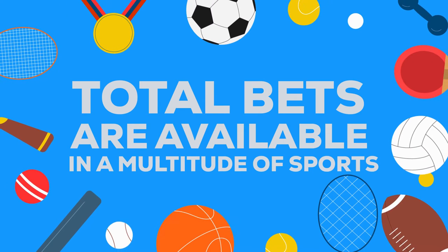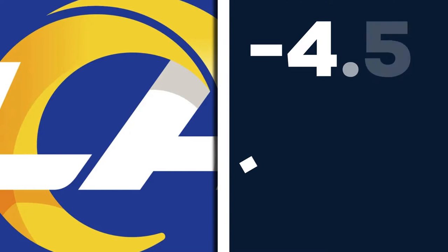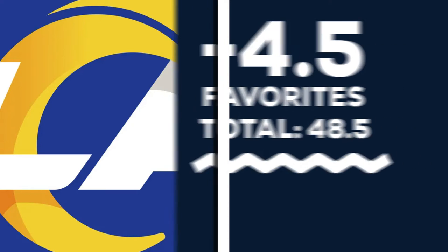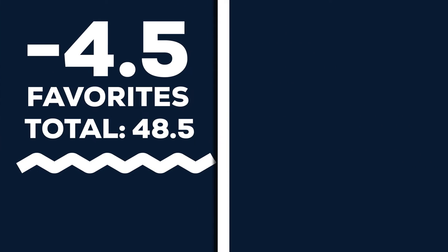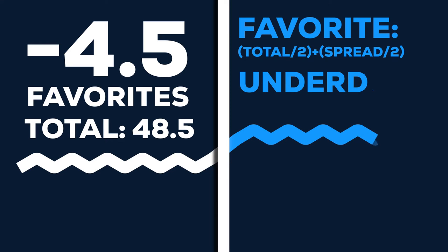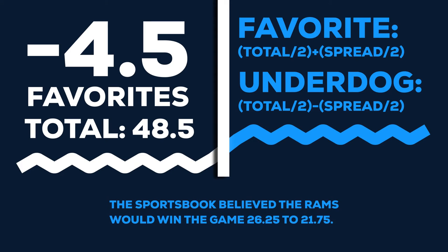Let's look at an example. While total bets are available in a multitude of sports, we'll look at the most popular: the NFL. In this year's Super Bowl, the Rams were four and a half point favorites and the total was set at 48 and a half. The formula for team totals is simple. For the favorite, you take the total divided by two plus the spread divided by two. And for the underdog — in this case the Bengals — you take the total divided by two minus the spread divided by two. Using that formula, the sportsbook believed the Rams would win 26.25 to 21.75, or by rounding, 26 to 22.